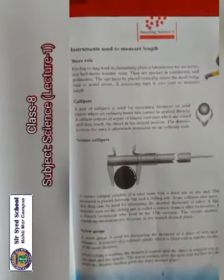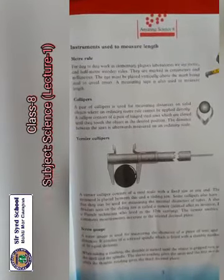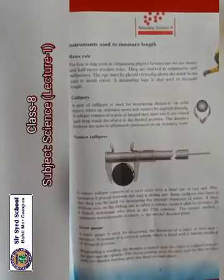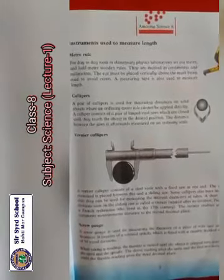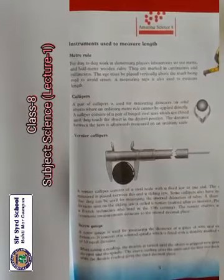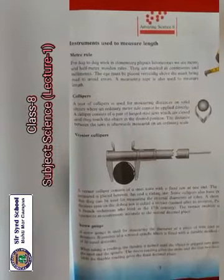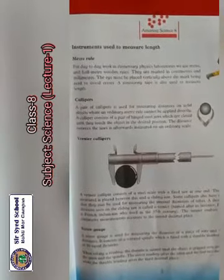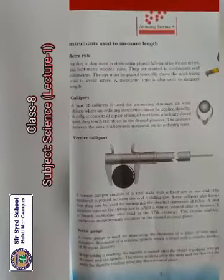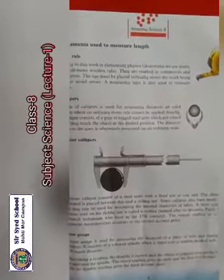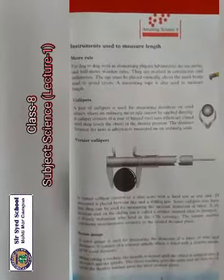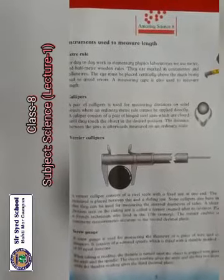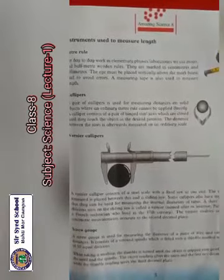Now page number 3: instruments used to measure length. The first instrument is the meter rule. For day-to-day work in elementary physics laboratory, we use meter and half-meter wooden rules, which are marked in centimeters and millimeters.